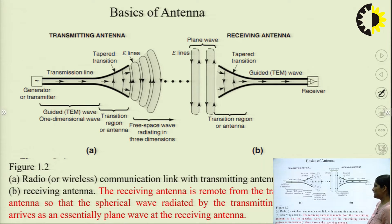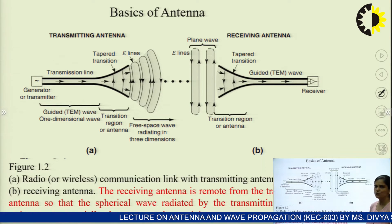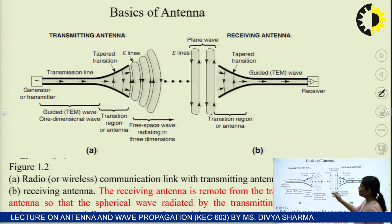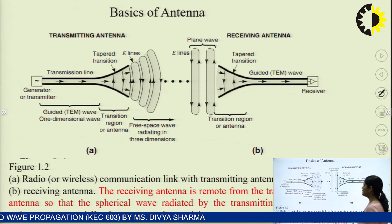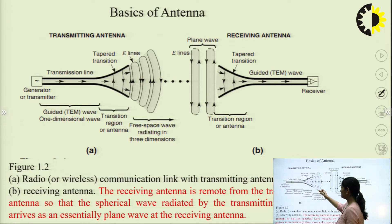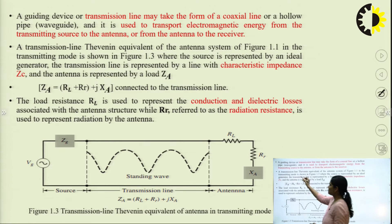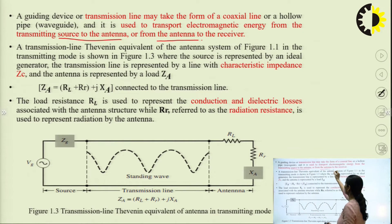The receiving antenna is removed from the transmitting antenna so that the spherical wave radiated by the transmitting antenna arrives as essentially a plane wave at the receiving antenna. The guiding device or transmission line may take the form of a coaxial line, used to transport electromagnetic energy from the transmitting source to the antenna or from the antenna to the receiver.